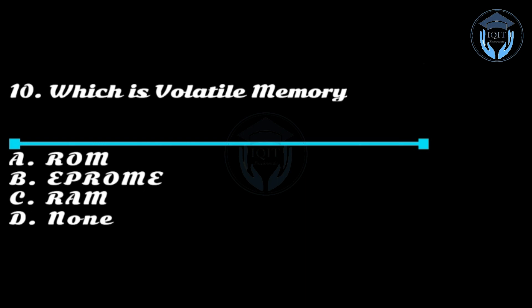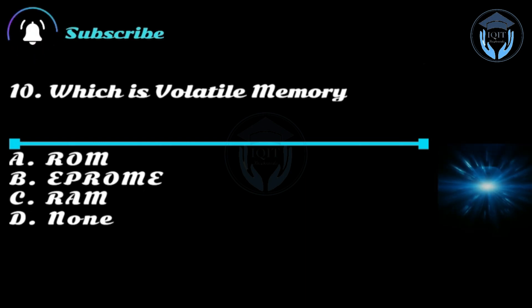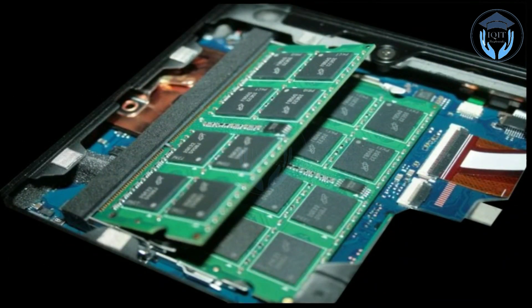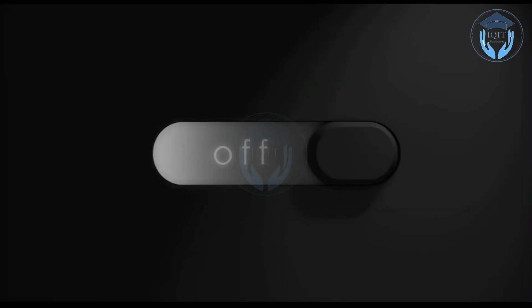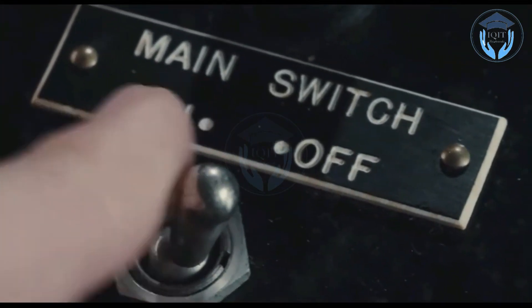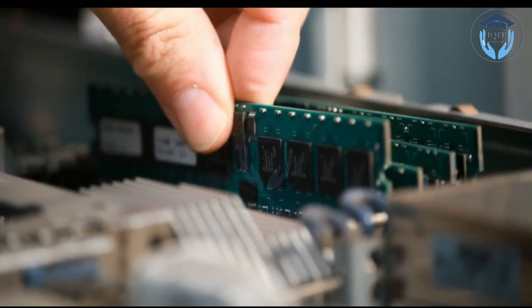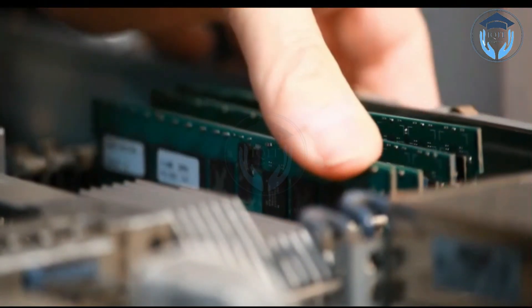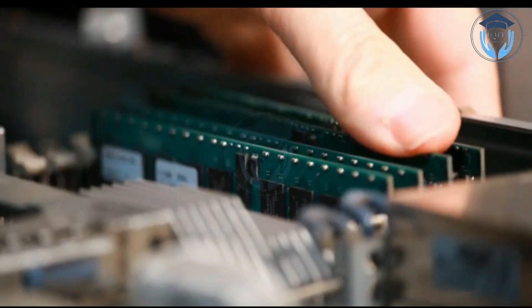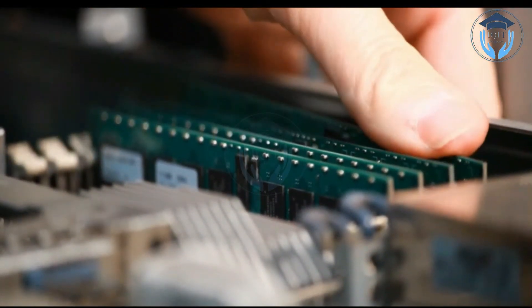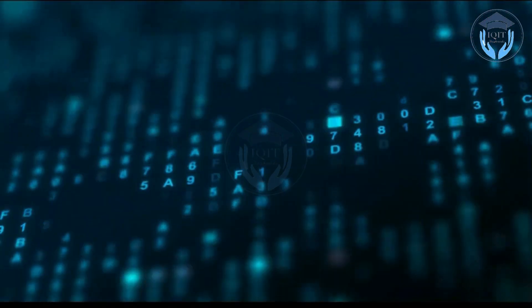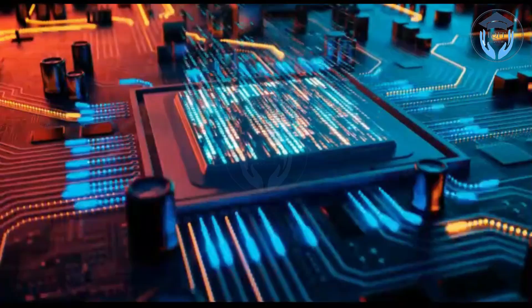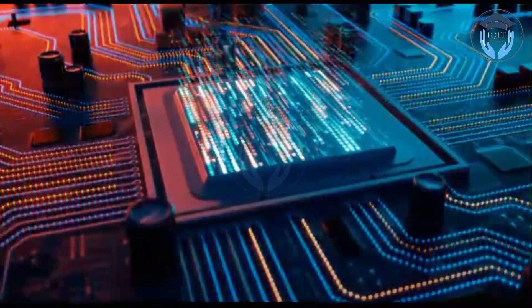Question ten: Which is volatile memory? Option A: ROM, option B: EPROM, option C: RAM, option D: none. Answer: option C, RAM. Volatile memory requires power to maintain its stored data; when power is off, the data is lost. The most common example is random access memory (RAM), used to temporarily store data and instructions the CPU needs to access quickly. RAM requires a constant power supply to retain data. Other examples of volatile memory include cache memory and registers.